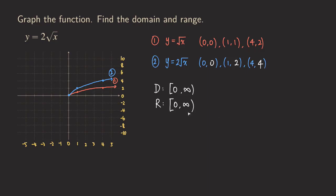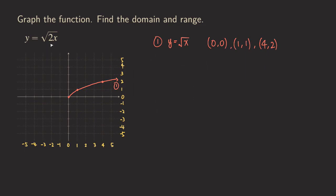Now we are going to try another example. This time we have the 2 inside the square root — so we have √(2x). This is similar to the previous problem where the 2 was on the outside. When the 2 is on the inside and greater than one, we have a horizontal compression. You can also think of it as a vertical stretch by rewriting as √2 · √x, since √2 is greater than one. But thinking of it as a horizontal compression is easier to graph.